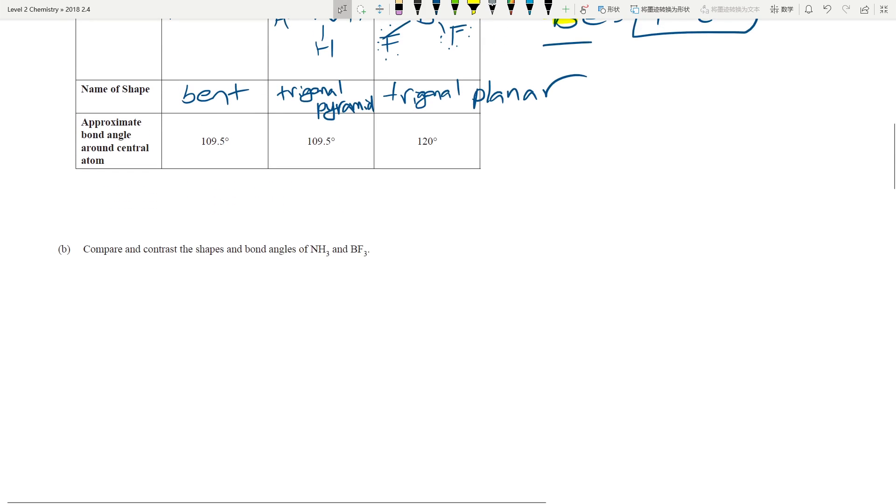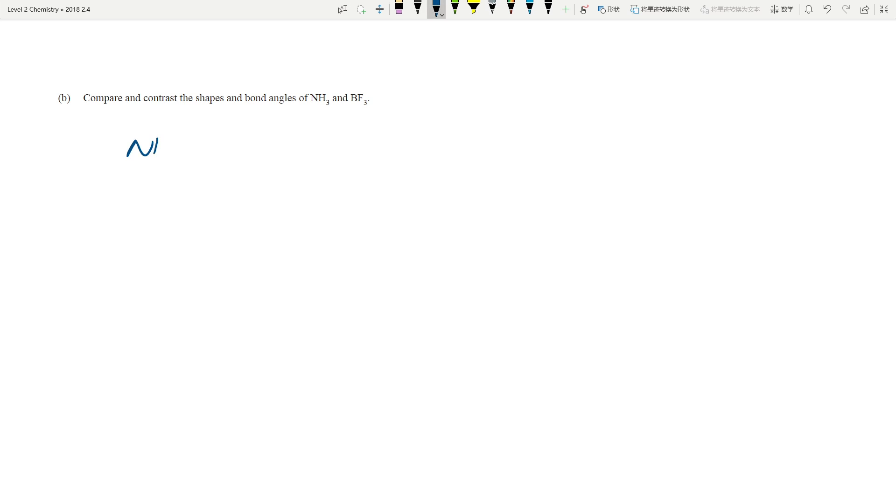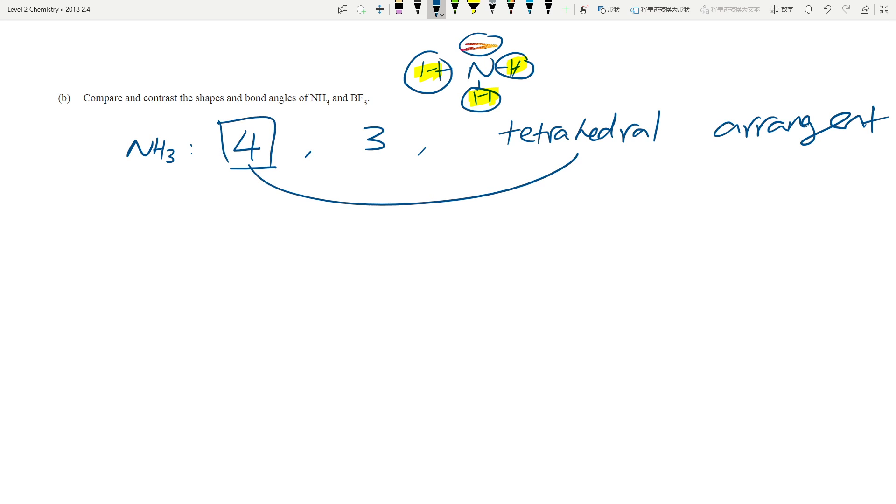Now compare and contrast the shapes and bond angles of NH3 and BF3. So NH3, I'm just going to do this quite briefly as well. This has four regions of electron density. And three of them are bonded. So if you look at NH3, it has three total four regions. So that's one, two, three, four. Three of them are bonded. And then you have one lone pair of electrons up here.